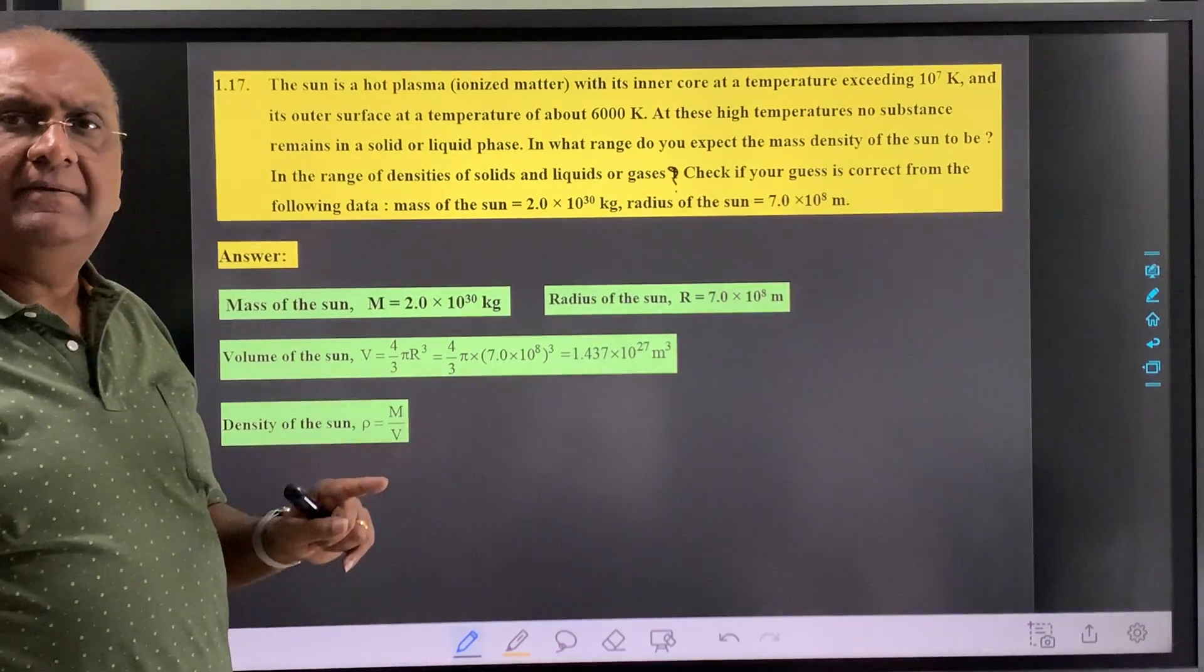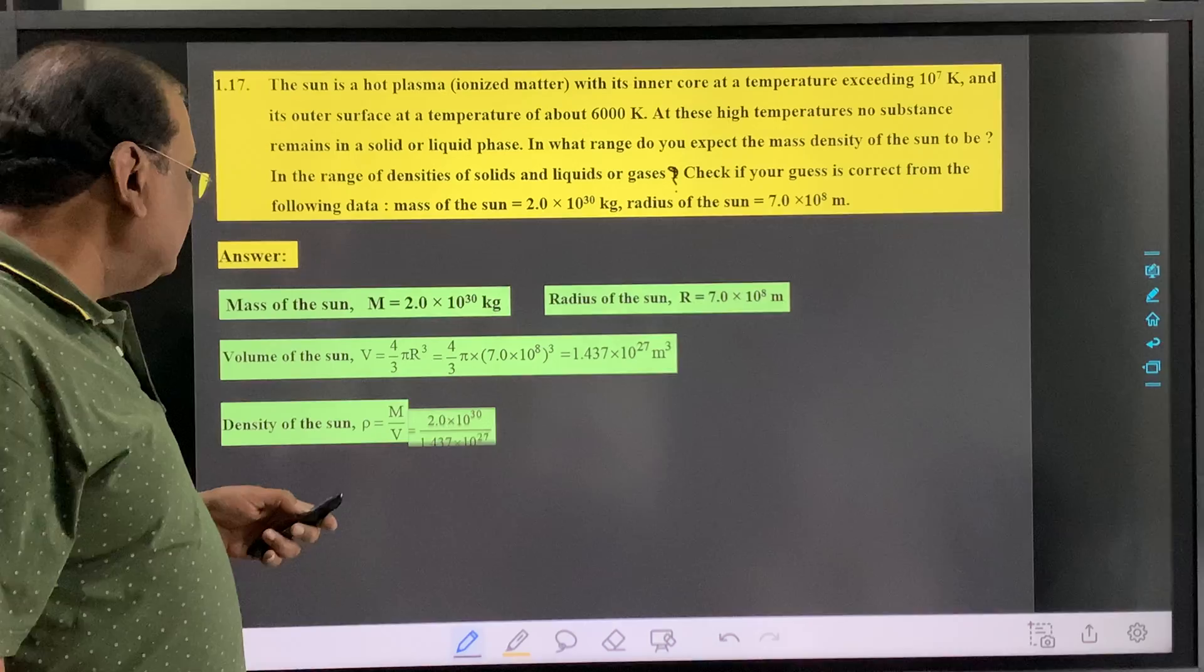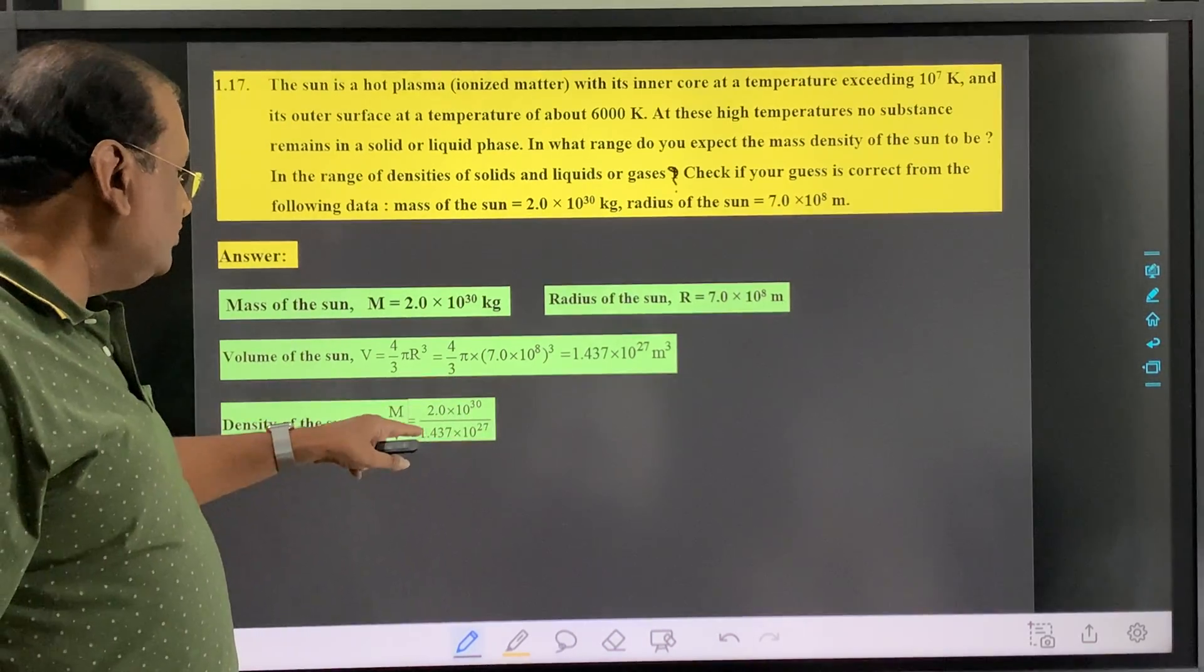So density of the sun - mass, that is 2×10^30, divided by volume.